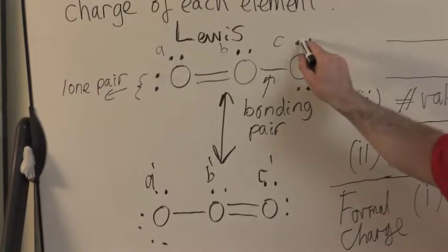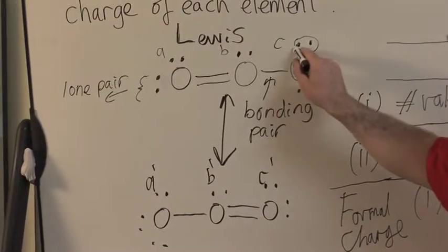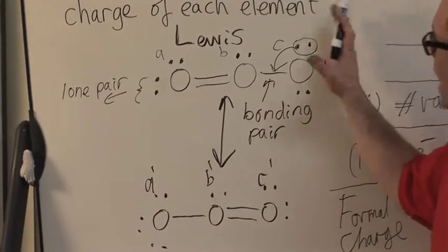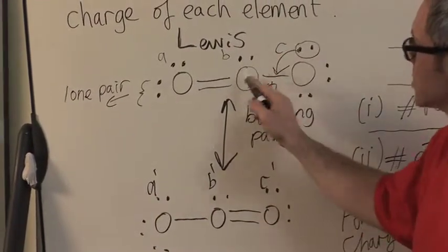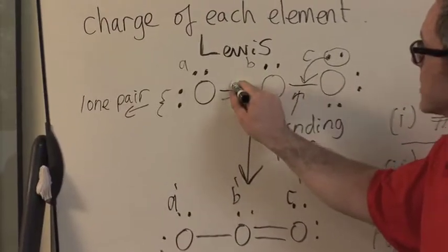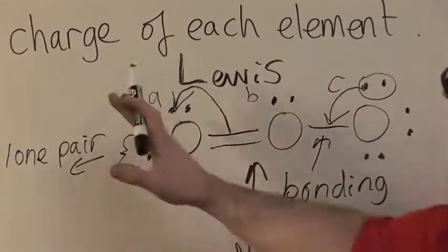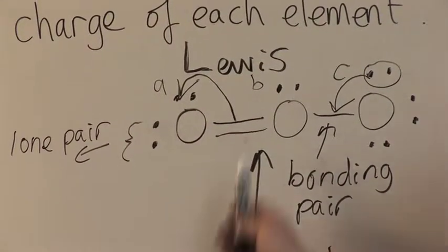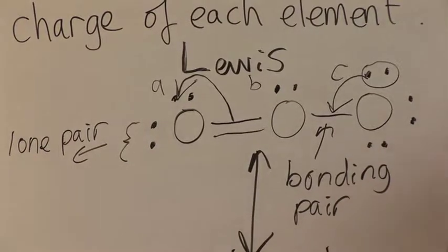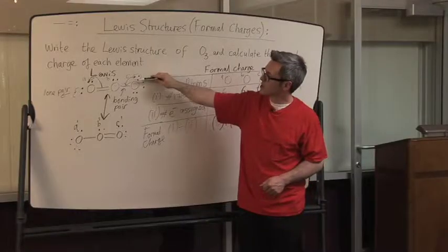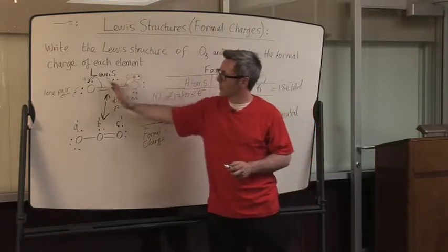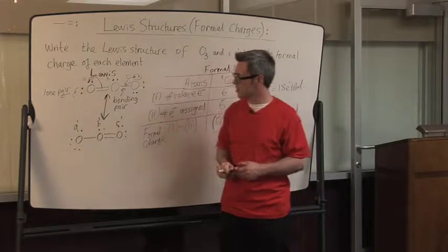So for example, if I take this lone pair, and I share this lone pair, it then adds electron density to the central oxygen, which then repels electron density in a concert-like fashion onto oxygen A. Oxygen A now has the third pair of lone electrons. It's now lost its double bond, whereas oxygen C has now acquired the double bond. So essentially, you have this flow of electron density, which restructures the molecule.